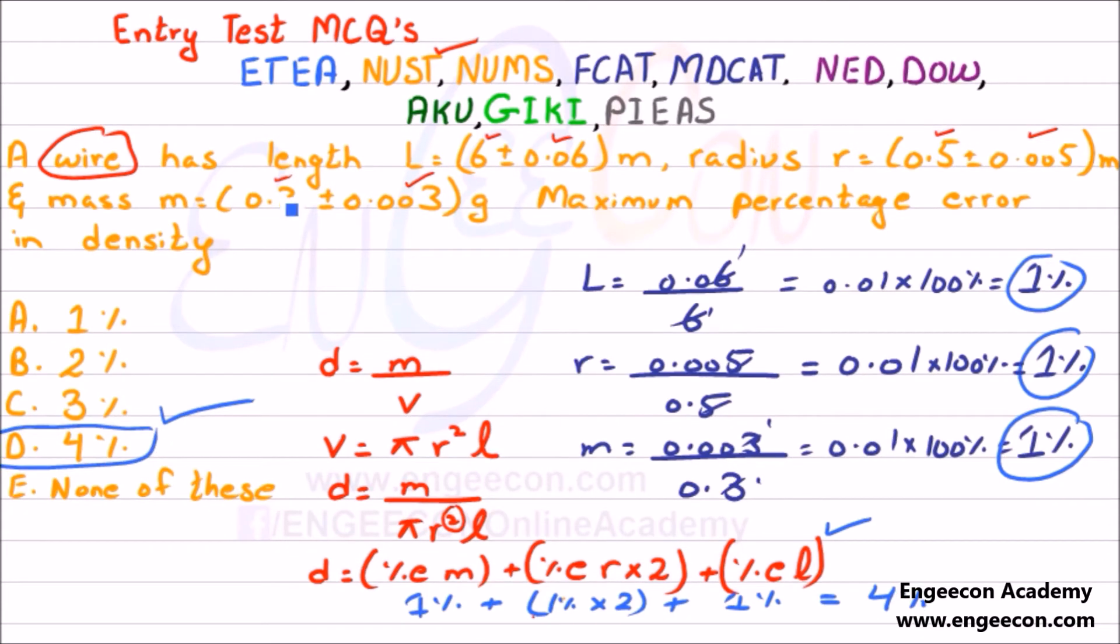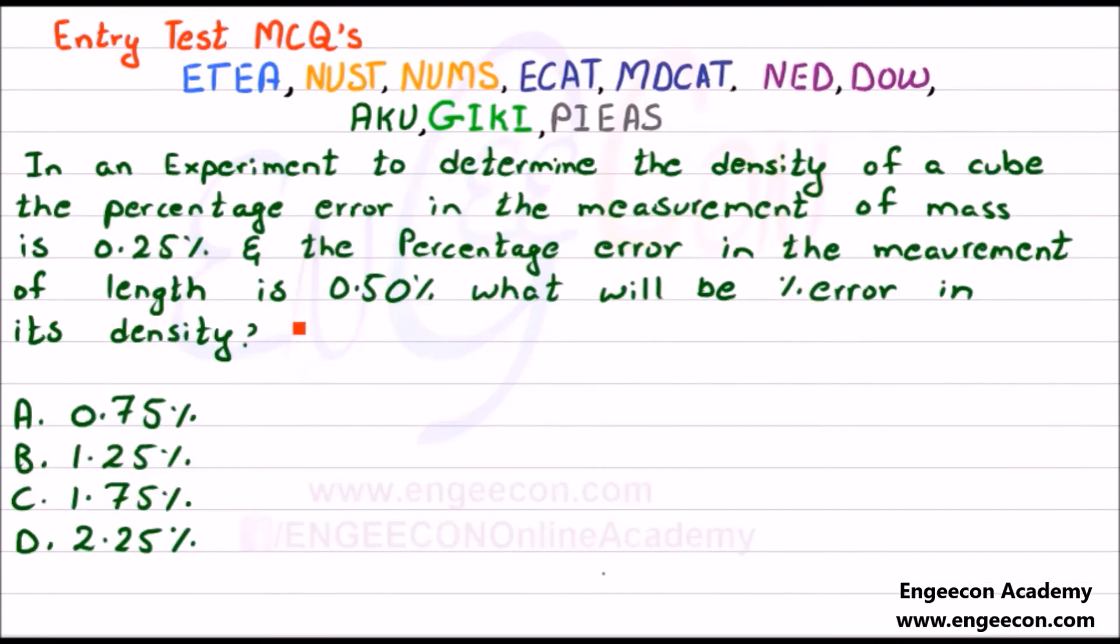Now you are able to solve these types of MCQs in entrance examinations if the examiner asks about fractional uncertainty, percentage uncertainty, or their combined effect. Here we have another entry test MCQ, a favorite of NEST, ETA, ECAT, MCAT, MDAT. In an experiment to determine the density of a cube, the error in the measurement of mass is 0.25% and the percentage error in the measurement of length is 0.5%. What will be the percentage error in its density?